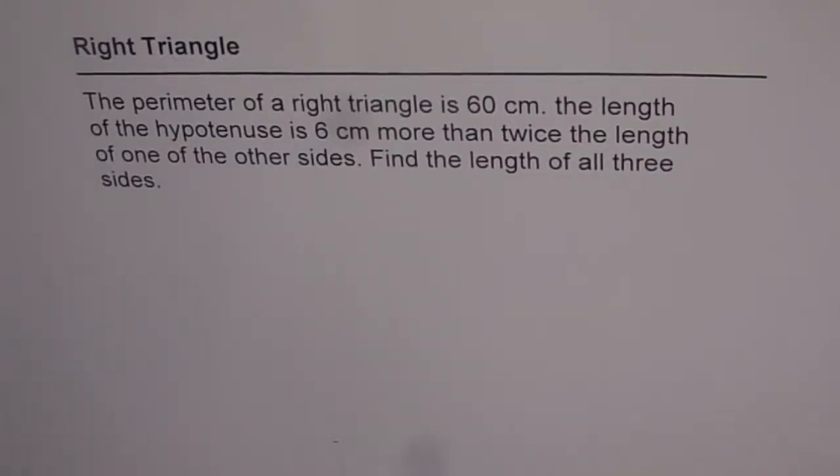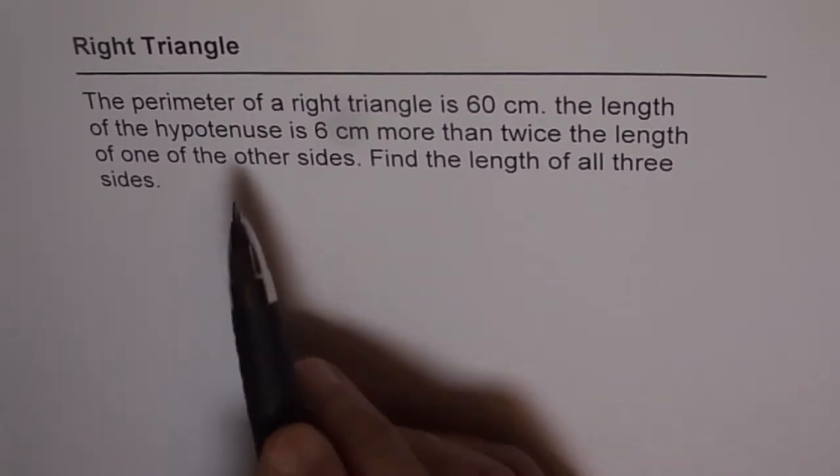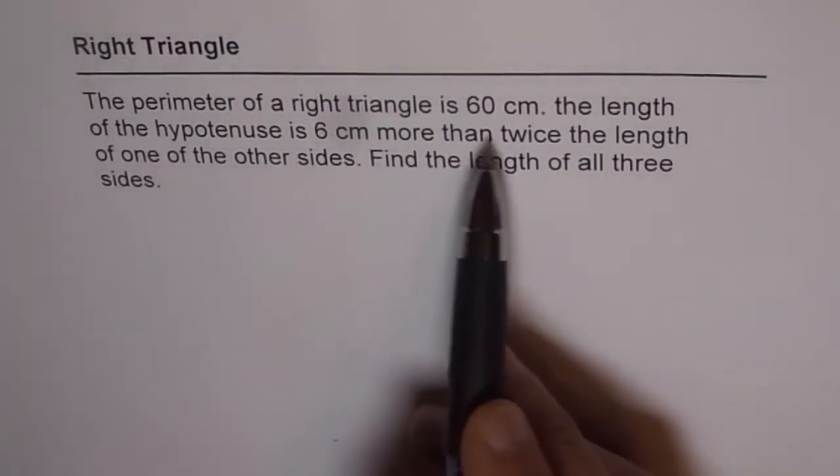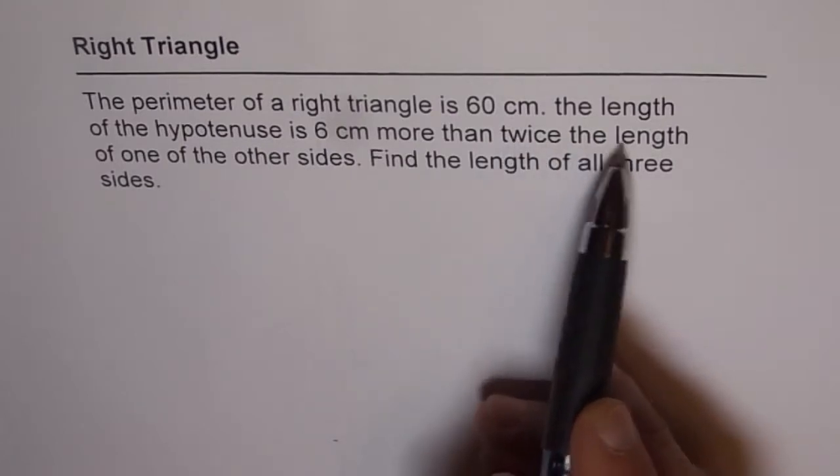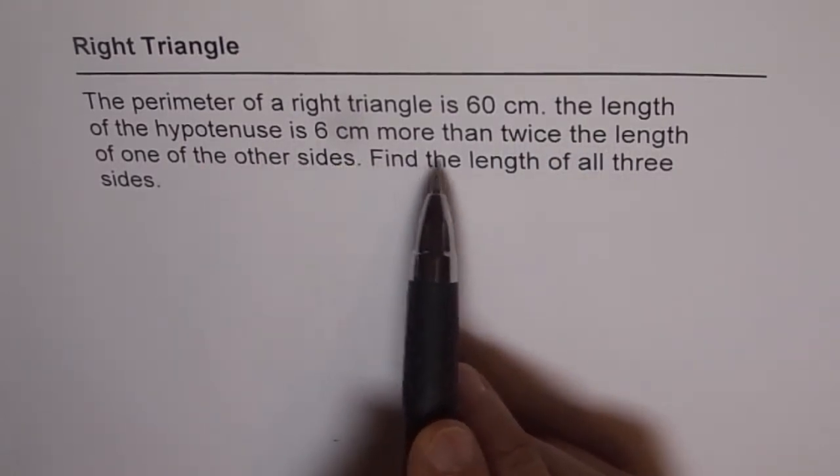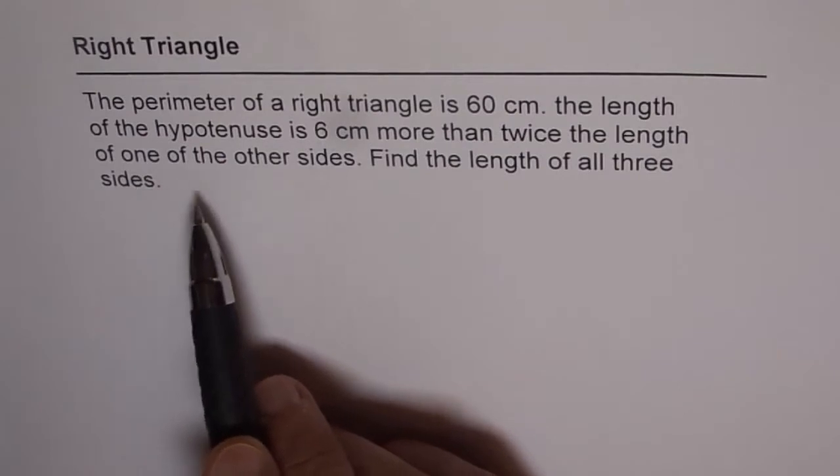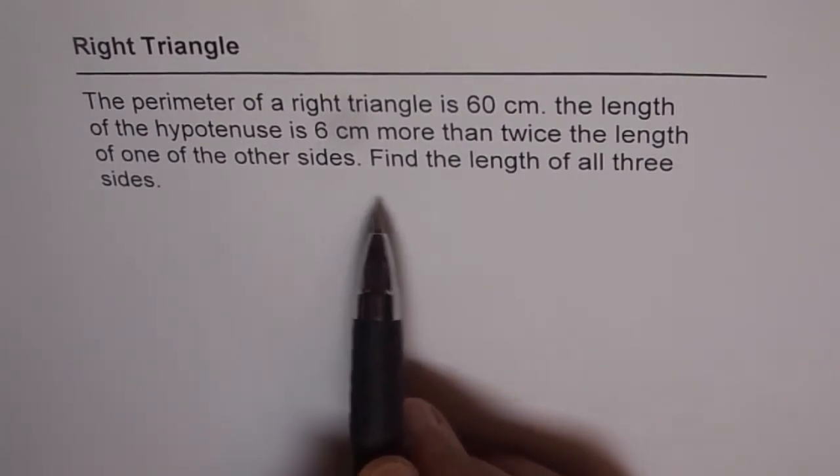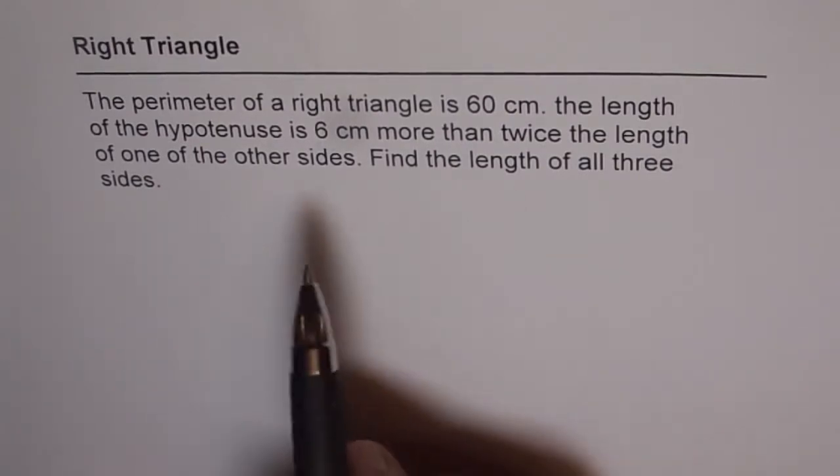We are now almost at the end of the test paper and these are a few thinking questions. This one is based on a right triangle. The question is, the perimeter of a right triangle is 60 cm, the length of the hypotenuse is 6 cm more than twice the length of one of the other sides. Find the length of all three sides.